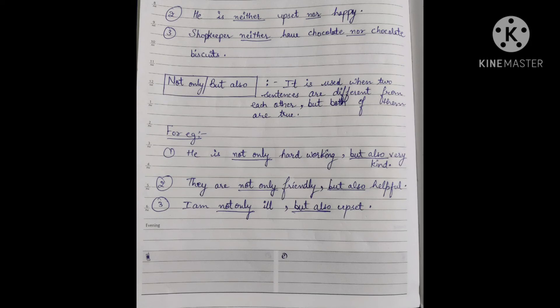Now let's see another correlative conjunction: 'not only...but also'. Both are used together. This is also a correlative conjunction. It is used when two sentences are different from each other but both of them are true. Let's see how - take the first example: 'He is not only hardworking but also very kind.'